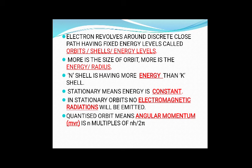For example, the N shell has more energy than the K shell. The next postulate states that the orbit is stationary, meaning the energy of the orbit is always constant. In a stationary orbit, no electromagnetic radiation will be emitted by the electron. The next postulate states that the quantized orbit means angular momentum is always an integer multiple of h upon 2π.